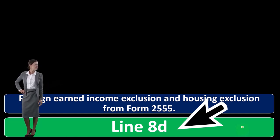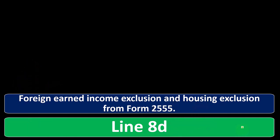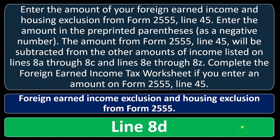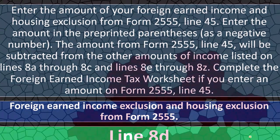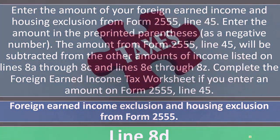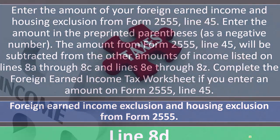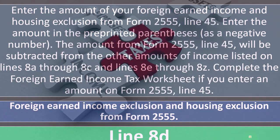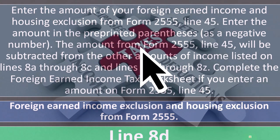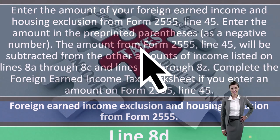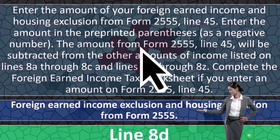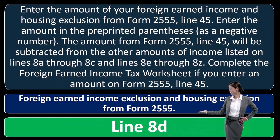Foreign earned income exclusion and housing exclusion from Form 2555 — enter the amount of your foreign earned income and housing exclusion from Form 2555, Line 45.